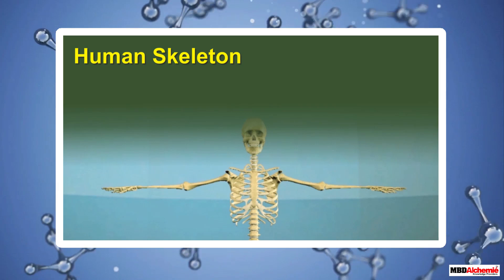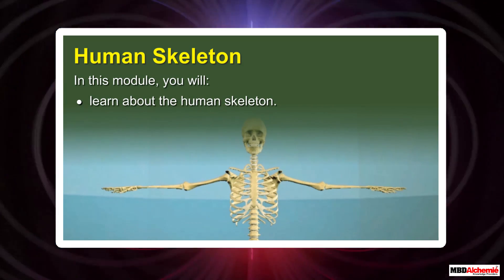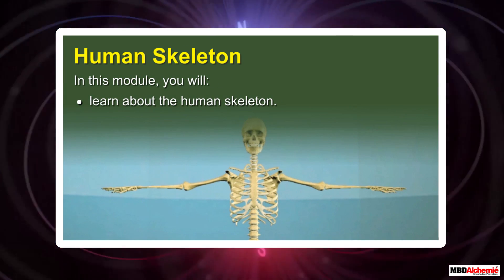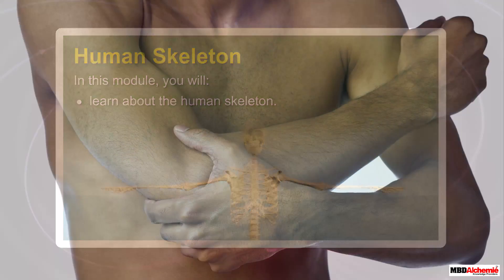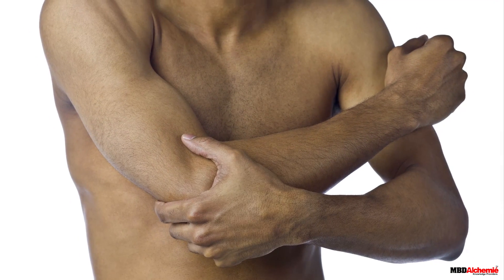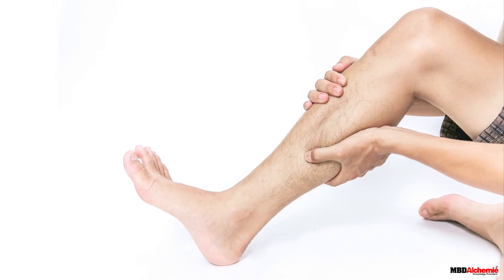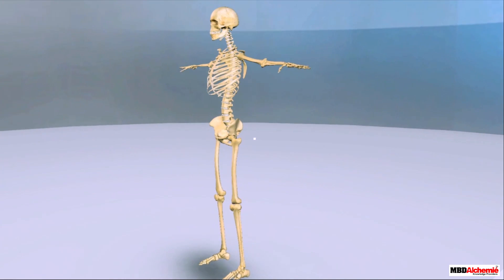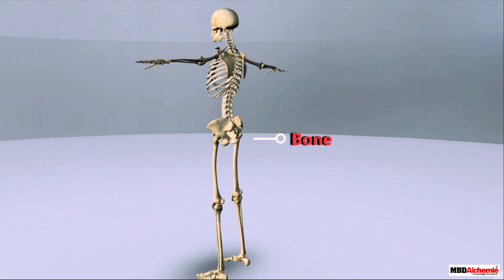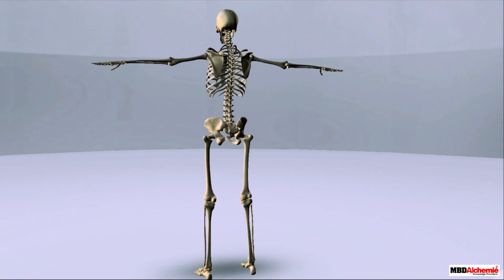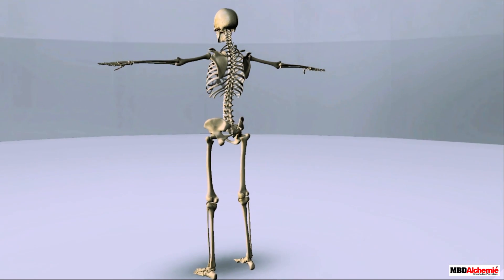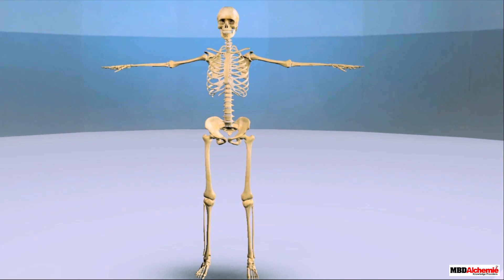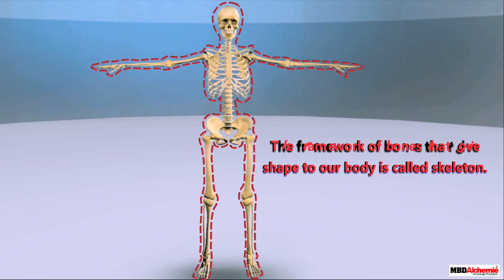In this module you will learn about the human skeleton. You often feel something hard when you touch your arm, your leg, and even your head. This hard substance inside the body is a bone. A human body is made of a number of bones. Together these bones form a framework that gives shape to our body. This framework is the skeleton.